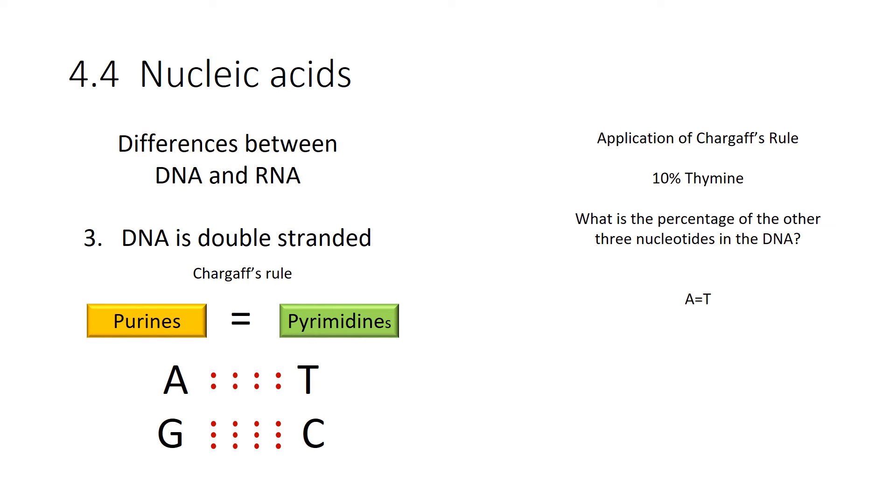Well, if I tell you I've got a piece of DNA that is 10% thymine, I know that thymine will always form two hydrogen bonds with adenine. So my amount of thymine will always equal the amount of adenine. So if I've got 10% thymine, I've got 10% adenine, which is 20% of your DNA total.